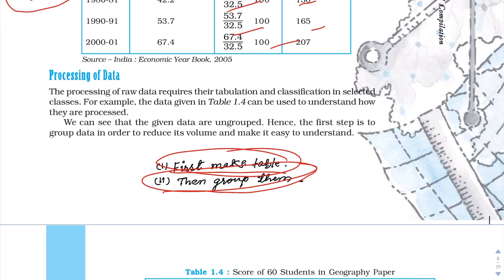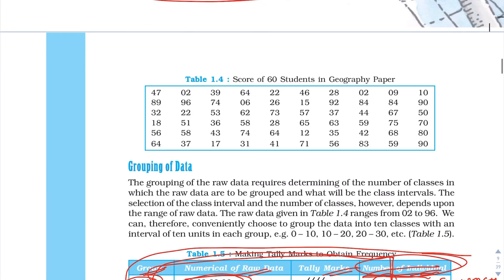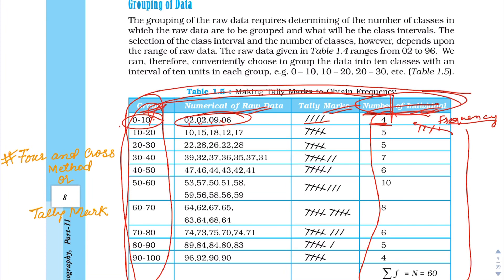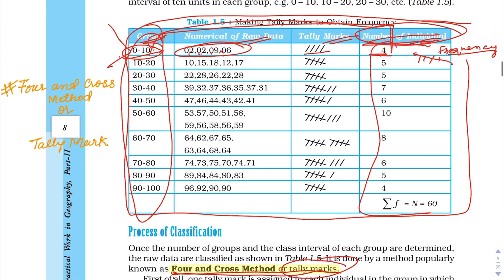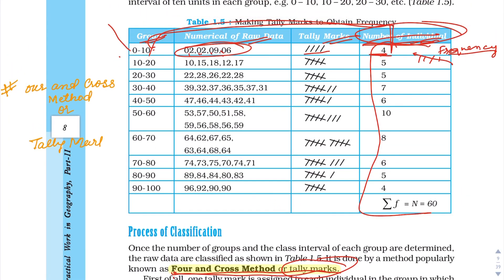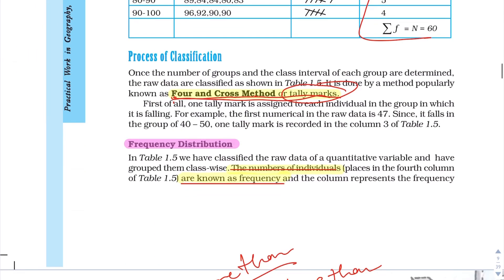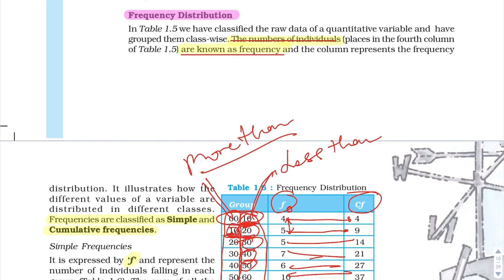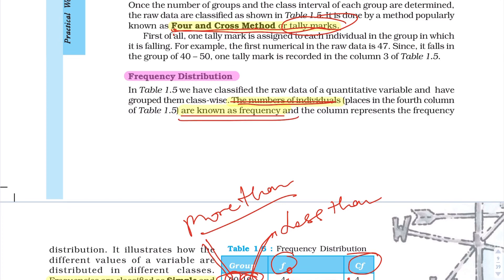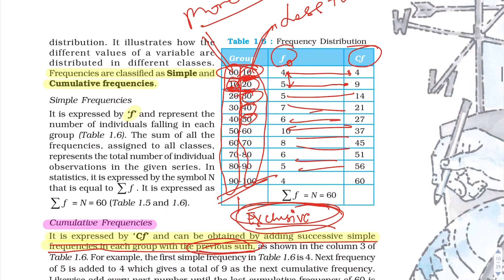Processing of data: when we process data, first we build a table and then group it. For grouping, we build a table in two tracks — inclusive and exclusive. We also use the tally marks for and cross method. This gives us the frequency distribution, number of individuals, and a frequency table with cumulative frequency.